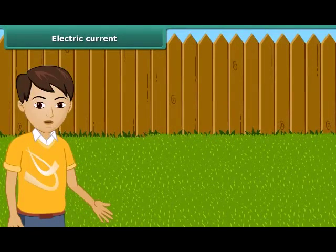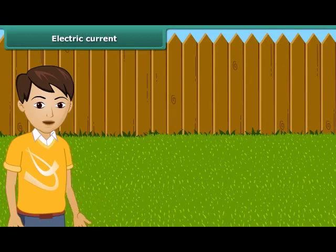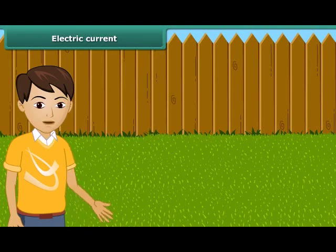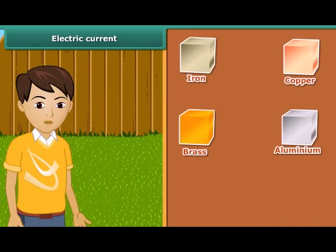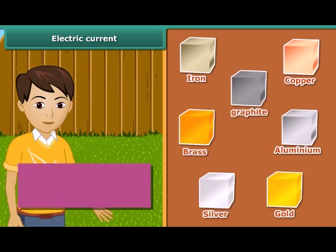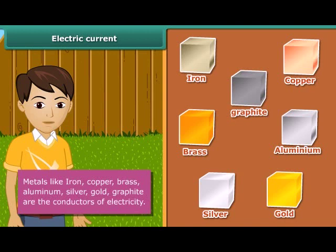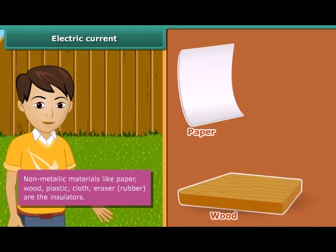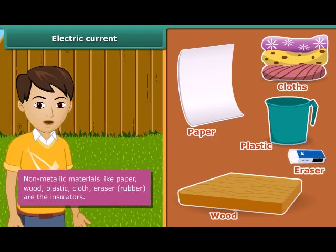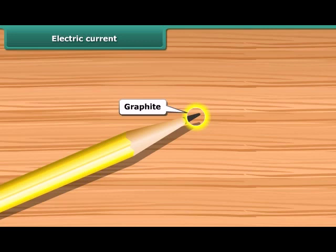Some materials allow electric current to pass through them; others do not. The materials that allow electric current to pass through them are called conductors. Iron, copper, brass, aluminum, silver, gold, graphite, etc. are conductors of electricity. The materials through which electric current doesn't flow are called insulators. Insulators are also known as non-conductors of electricity. Paper, wood, plastic, cloth, eraser, and rubber are insulators. Pencil lead is made of graphite, a form of carbon. It is a non-metal but it is a conductor of electricity.